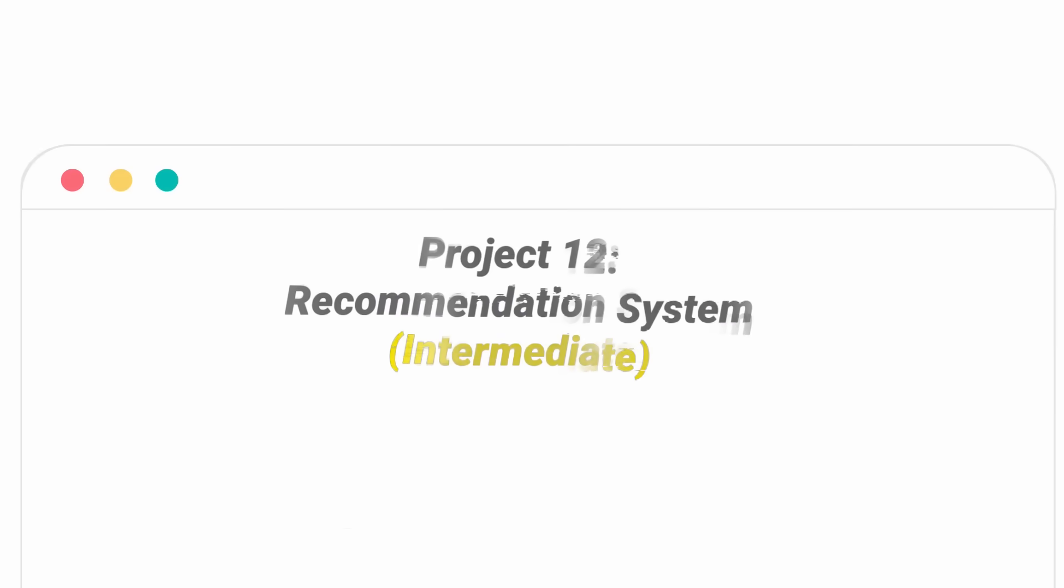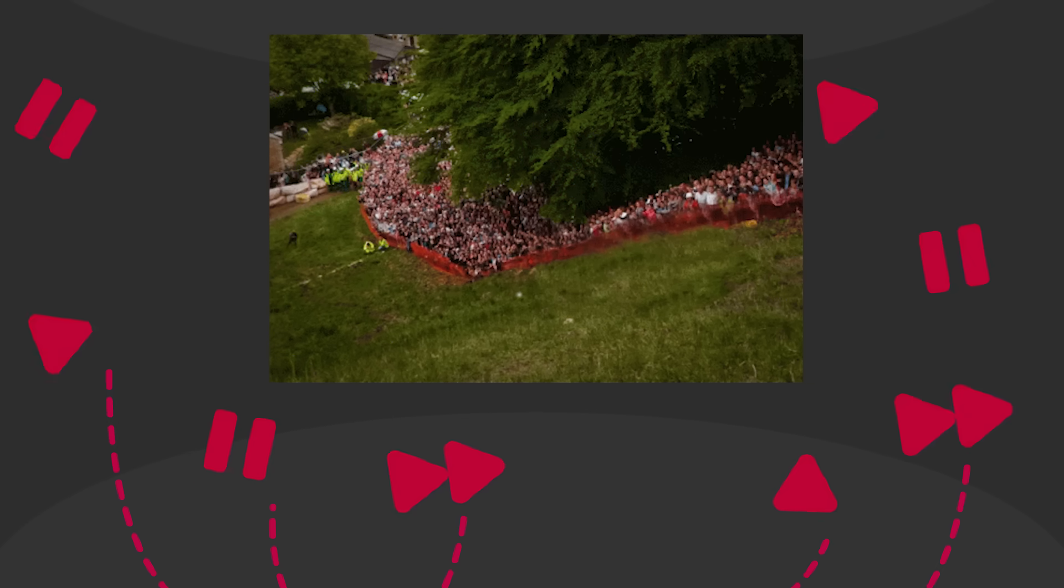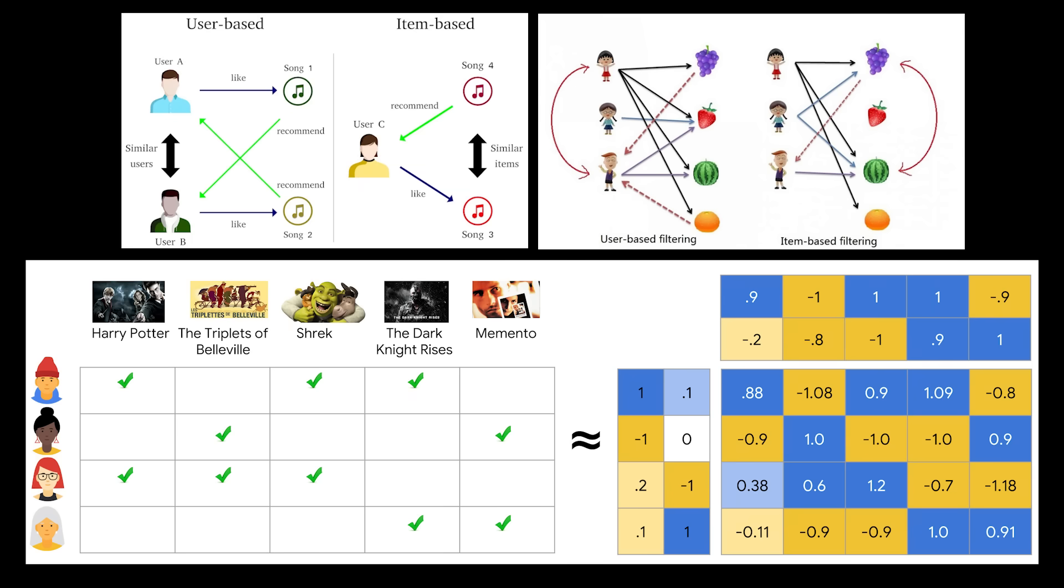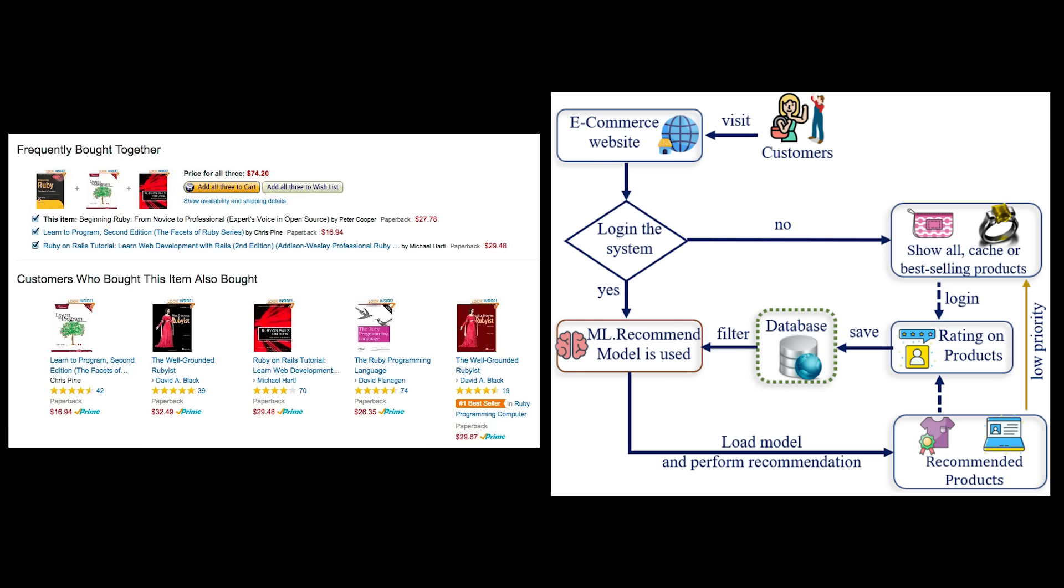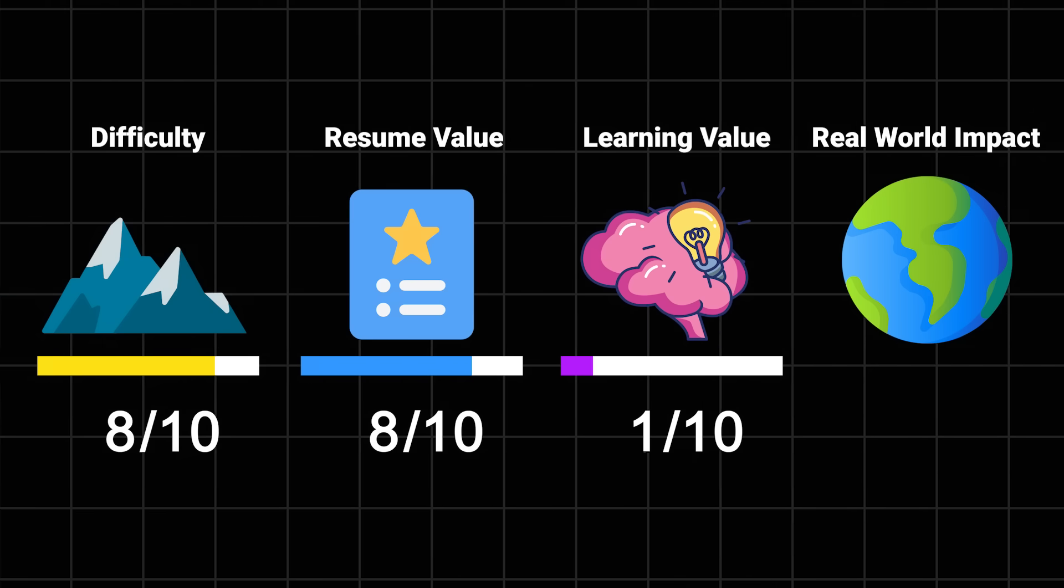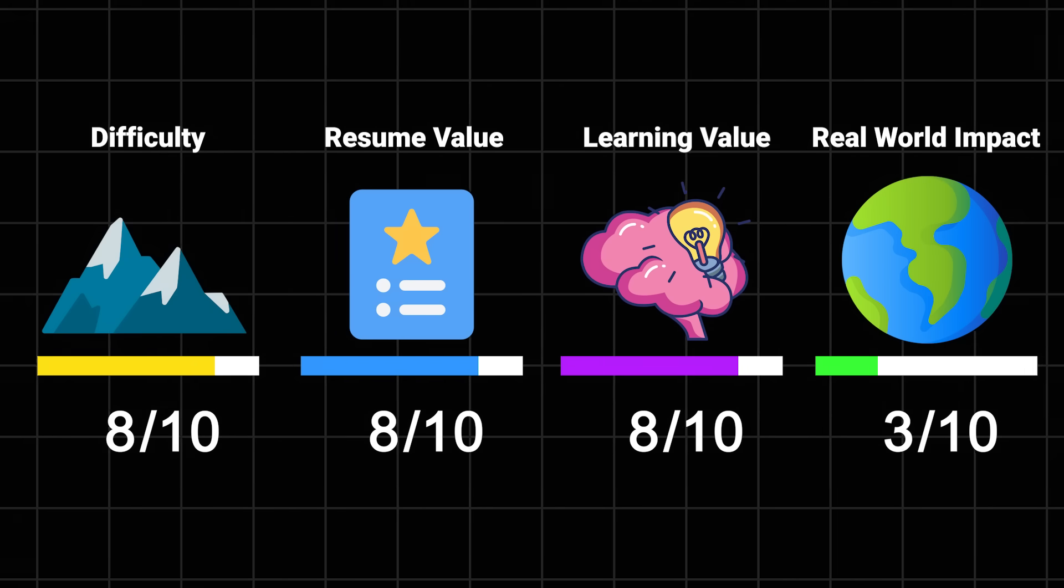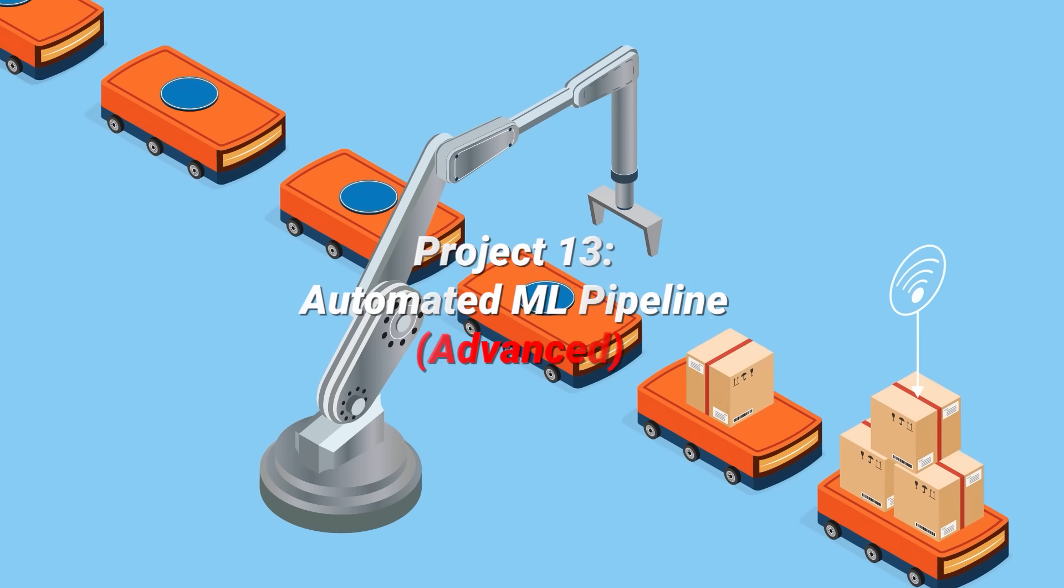Recommendation system. Ever wonder how Netflix knows you'll like that weird documentary about competitive cheese rolling? Time to build your own recommendation system. You'll learn about collaborative filtering, content-based recommendations, and why 'users who bought this also bought that' isn't as simple as it sounds. Difficulty: 6 out of 10. Resume value: 8 out of 10. Learning value: 8 out of 10. And impact: 9 out of 10 because this stuff is actually used everywhere.